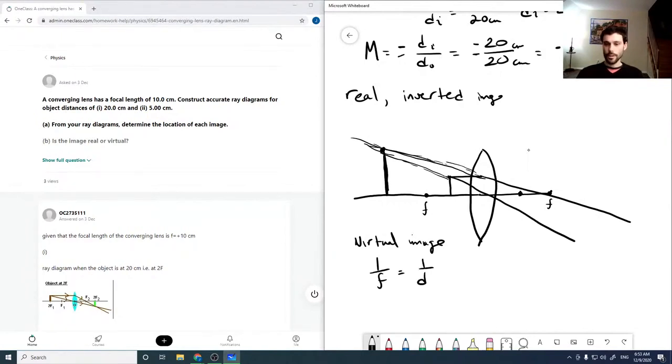1 over F is 1 over DI plus 1 over D not. Remember that DI will be positive if it's on the image side and negative if it's on the object side. So here we have 1 over, I'm gonna do this properly. 1 over 10 centimeters is the focal point, or 1 over the focal point. 5 centimeters is our object. And then that's 1 over DI.